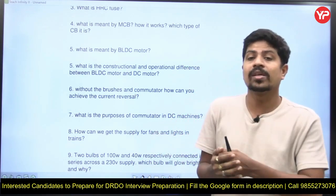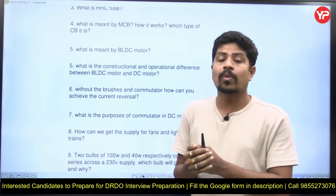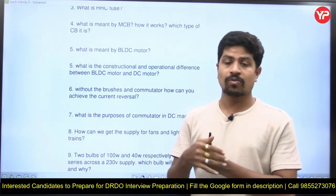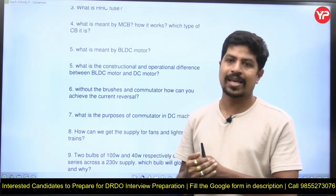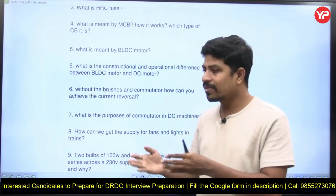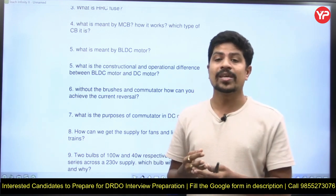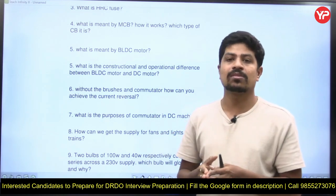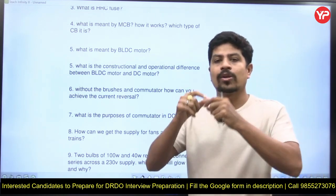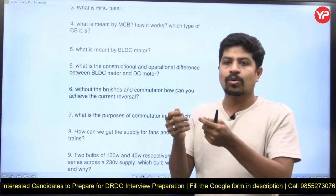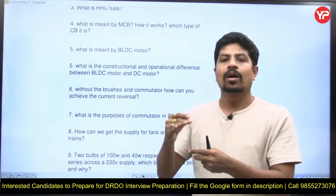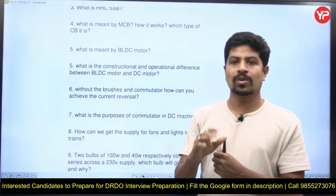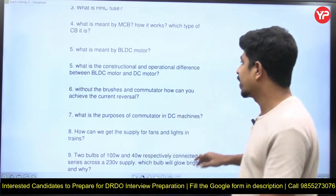At houses you will find MCB, where it trips automatically if the current increases beyond its rated value — it will trip immediately. That is the miniature circuit breaker. The difference between a normal circuit breaker and an MCB is that CB used for high voltages and high currents in the power system is auto-reclose — closing and opening can be done remotely — but MCB has to be manually closed once it trips.